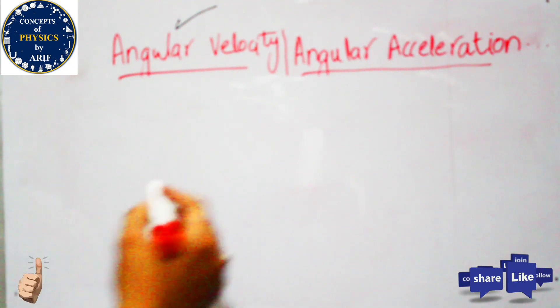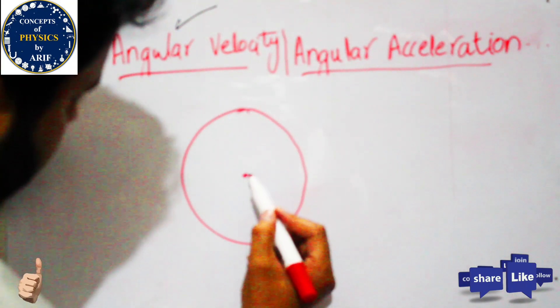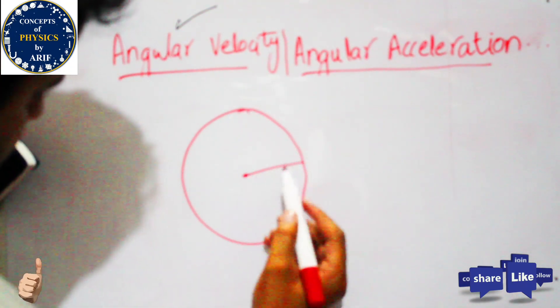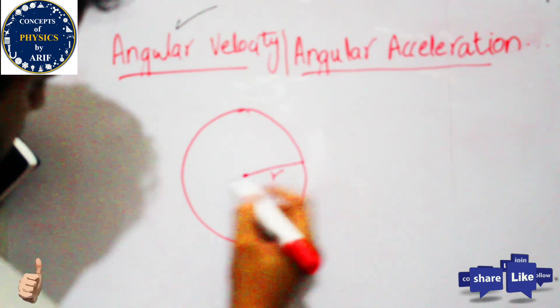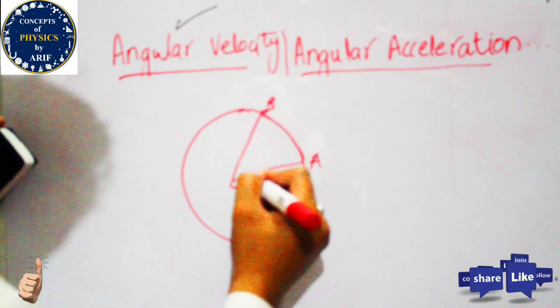When a body of mass M with radius R moves from point A to point B in the circular path,